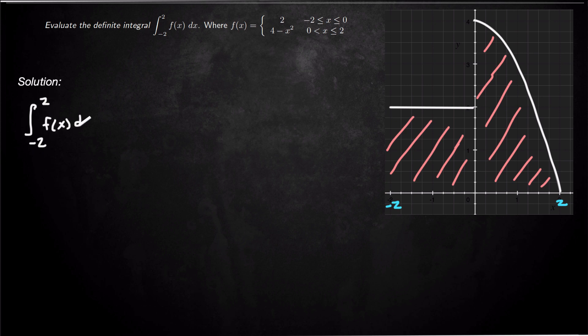...can be broken up intermediately as the integral from negative 2 to 0 of f of x dx plus the integral from 0 to 2 of f of x dx. And we basically do this because we want to break it up depending on where our pieces are. So our pieces change at x equals 0, so we're going to break up this integral.